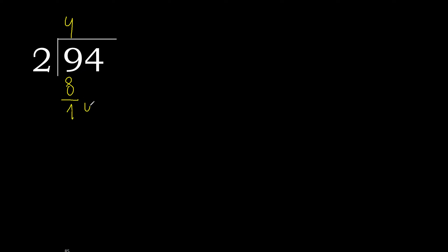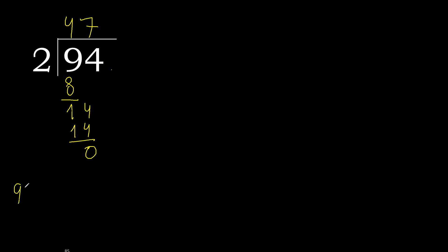Next: bring down 14. 2 multiplied by 7 is 14, which is not greater. 14 minus 14 is 0. There is no next number, therefore finish: 94 divided by 2 is 47.